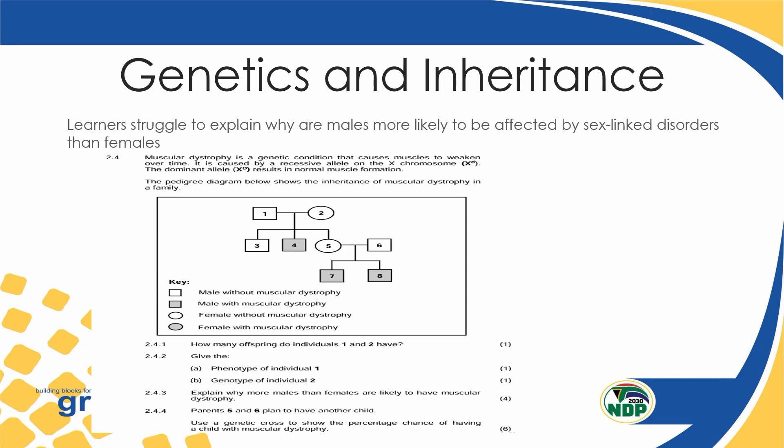Let's look, for example, at this question. Muscular dystrophy is a genetic condition that causes muscles to weaken over time. It is caused by a recessive allele on an X chromosome. Highlight 'X chromosome.' Once it says X chromosome, it means now it is a sex-linked disorder. You are already given the allele to use, which is XD. The dominant allele is X capital D, which results in normal muscle formation. So it is important to read the opening statement — once you miss it, you will end up not getting the answers right on your question.